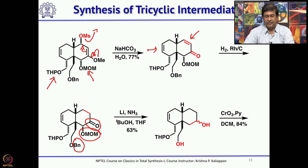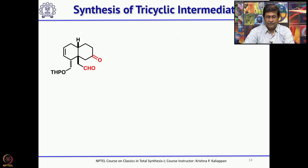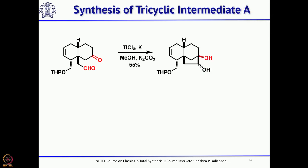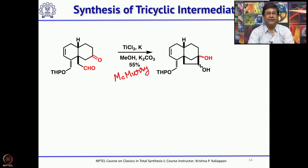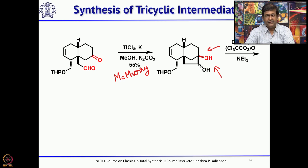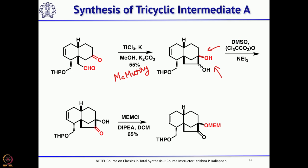The McMurry coupling on this keto-aldehyde gives the third five-membered ring. The tertiary alcohol is present along with a secondary alcohol. The secondary alcohol is oxidized under modified Swern conditions to give the alpha-hydroxy ketone, and the bridgehead hydroxyl is protected as MEM ether. Now the right-hand side is taken care of, and what's needed is modification on the left-hand side.